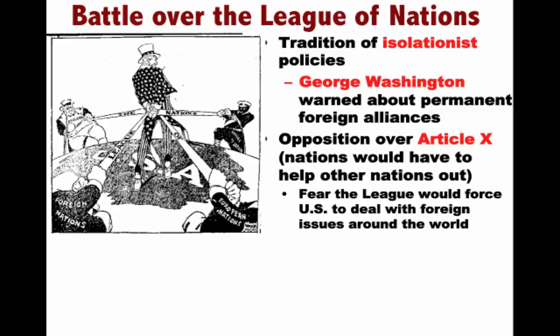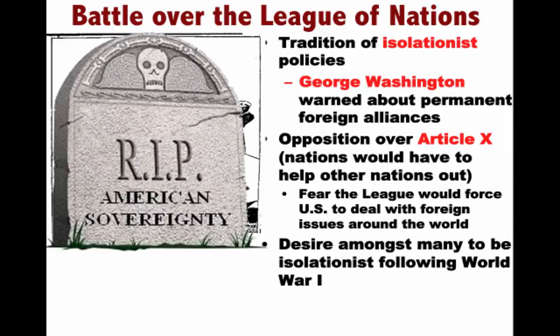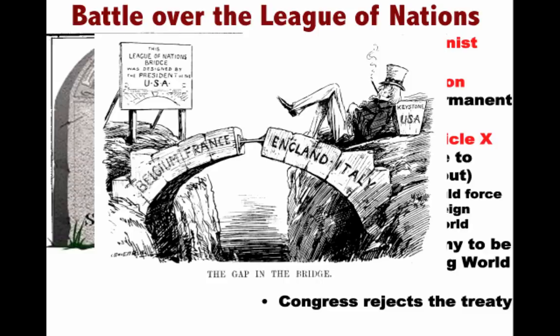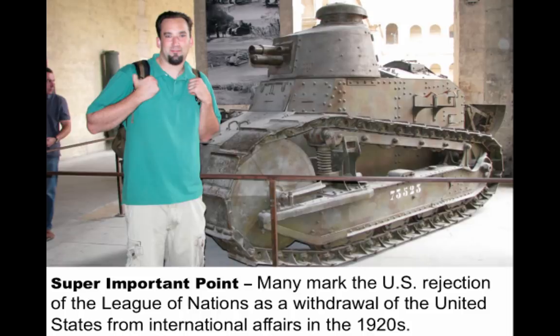There was also the fear that Europe would meddle in the Western Hemisphere, which under the Monroe Doctrine we did not want. Another factor was the desire amongst many to be isolationist following World War I. We had fought this brutal, horrible war and there was a feeling we just wanted to focus on ourselves. Ultimately, Congress rejects the treaty. The League of Nations is formed without the United States. Many mark the U.S. rejection of the League of Nations as a withdrawal from international affairs in the 1920s — though as we'll see in the next video, this is a little more complicated than that.